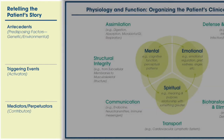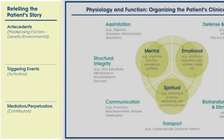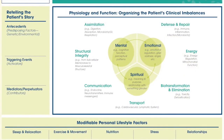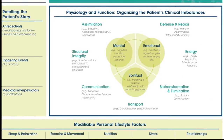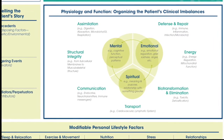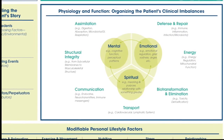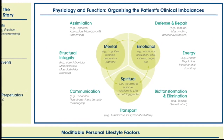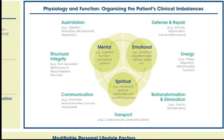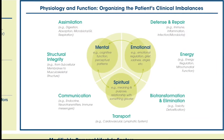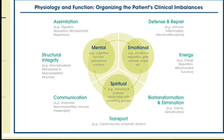Antecedents, triggers, and mediators help the clinician see weak points in a person's constitution and how the disease evolved over time. Chronic disease is complex and is best understood by appreciating that the body itself is a complex system. Clinicians are most successful treating chronic disease when they use a systems biology approach to help identify and address the underlying causes of chronic disease.